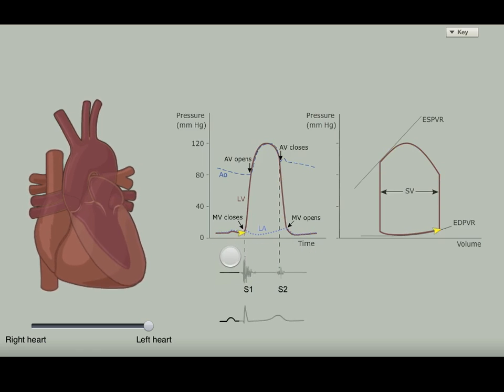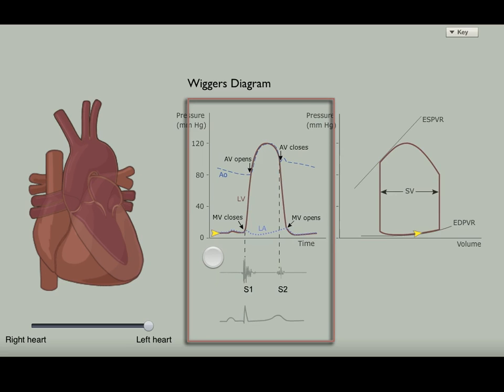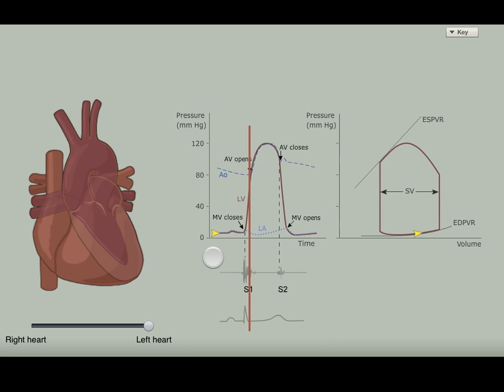Here are some key things to observe as you play with the diagram. The center stack of three graphs, one above the other, is called a Wigger's diagram. It has a common time axis so that if you draw a vertical line, it cuts through all three graphs at what corresponds to the same time in the cardiac cycle.